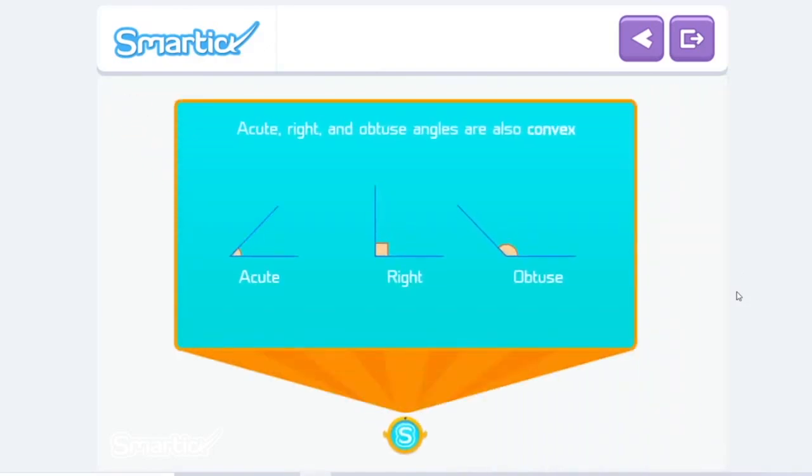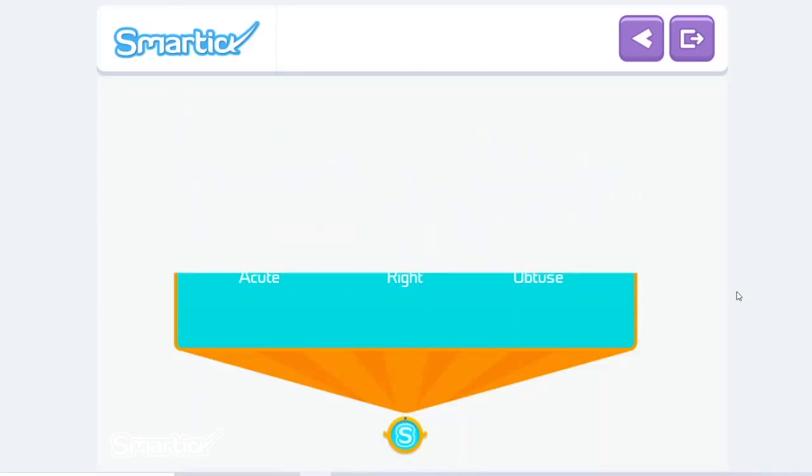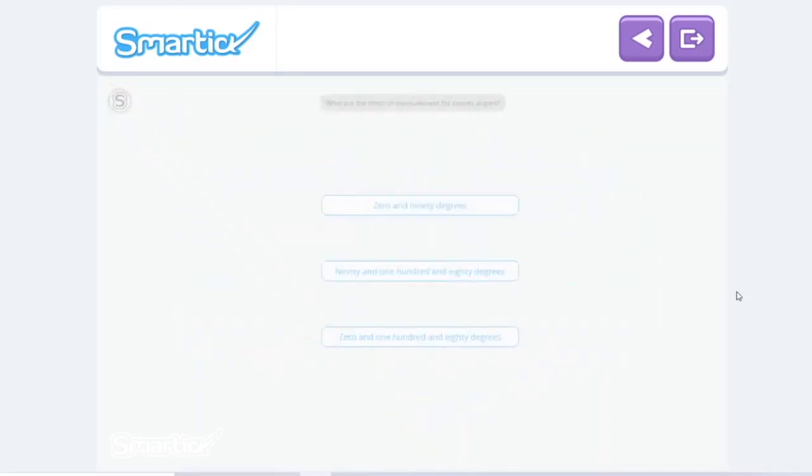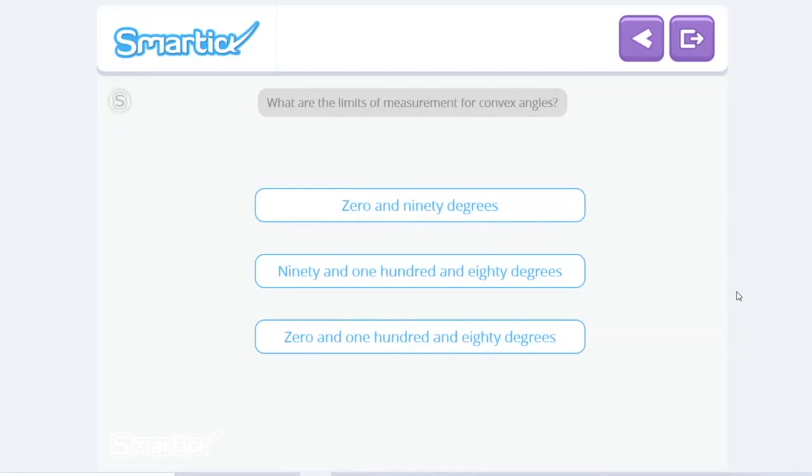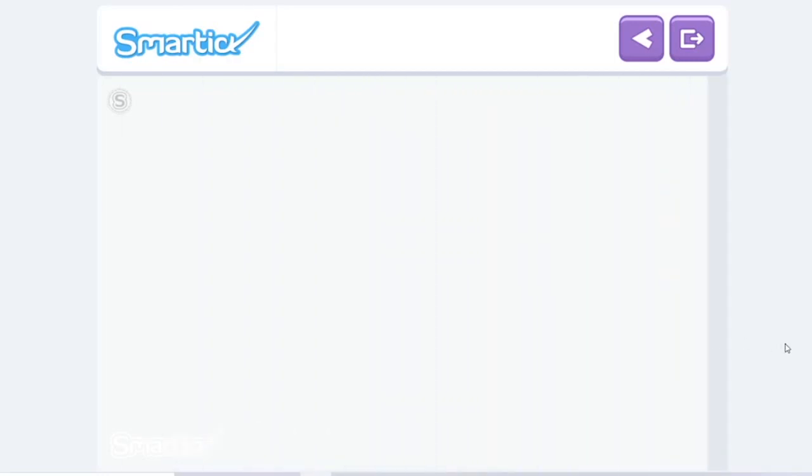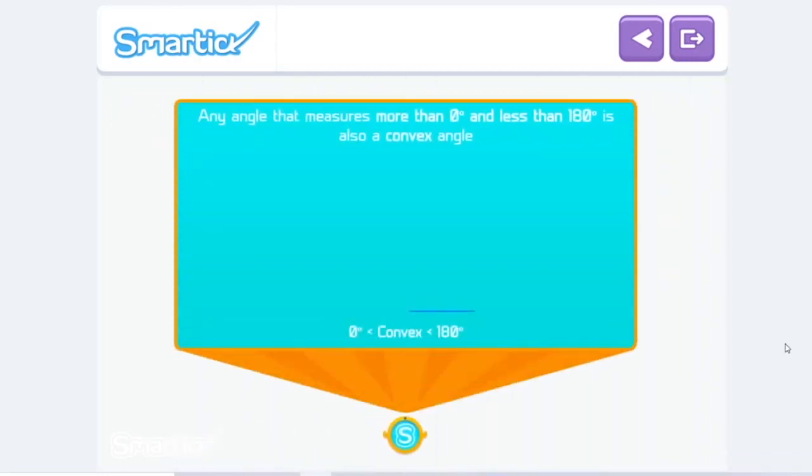Therefore, acute, right, and obtuse angles are also convex. What are the limits of measurement for a convex angle? For a convex angle, it's between 0 and 180 degrees. Excellent. Any angle that measures more than 0 and less than 180 degrees is also a convex angle.